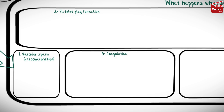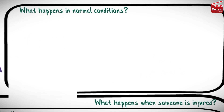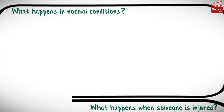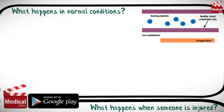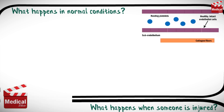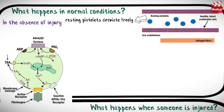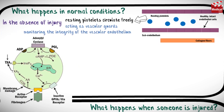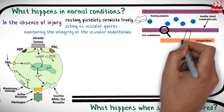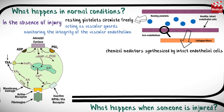Let's make an illustration of platelets circulating in blood vessels, healthy intact endothelium and collagen fibers in the subendothelium, and a platelet having various types of receptors on its membrane. In the absence of injury, resting platelets circulate freely, acting as vascular guards monitoring the integrity of the vascular endothelium.